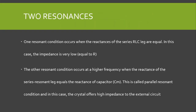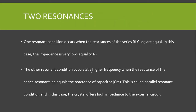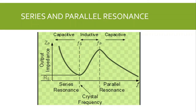The second condition is the parallel resonance condition, which occurs at a higher frequency. It occurs when the reactance of the series RLC leg equals the reactance of the shunt capacitor Cm. In the parallel resonance condition, the crystal offers high impedance to the circuit. Looking at the crystal impedance versus frequency graph, at the series resonance frequency the impedance is lowest, and the series resonance frequency is given by F = 1/(2π√LC), where L and C are the components of the series RLC leg. As frequency increases beyond series resonance, the crystal acts as an inductive element.